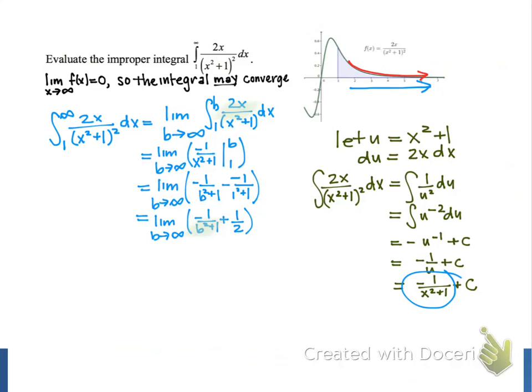This means the term negative 1 divided by b squared plus 1 will approach 0, and then the sum of both terms will approach 1 half. And that's our final result.